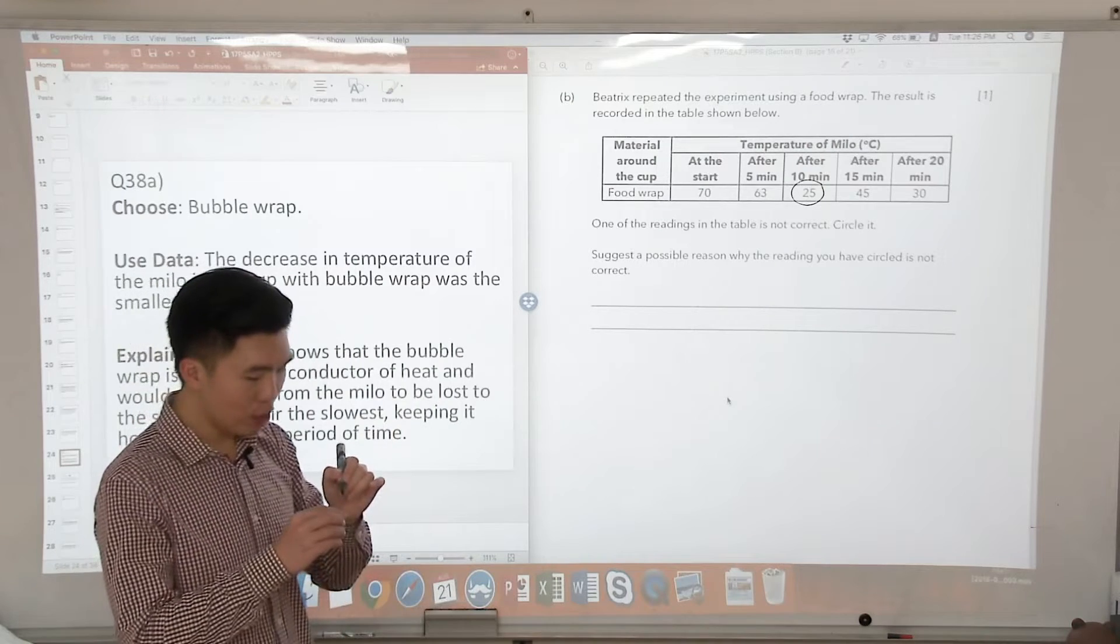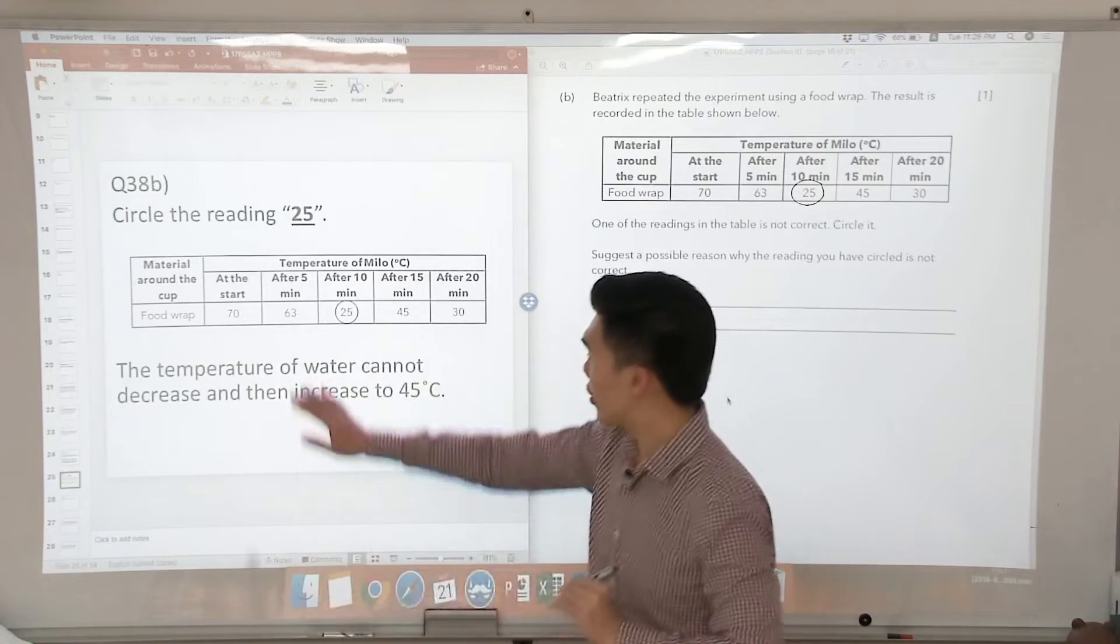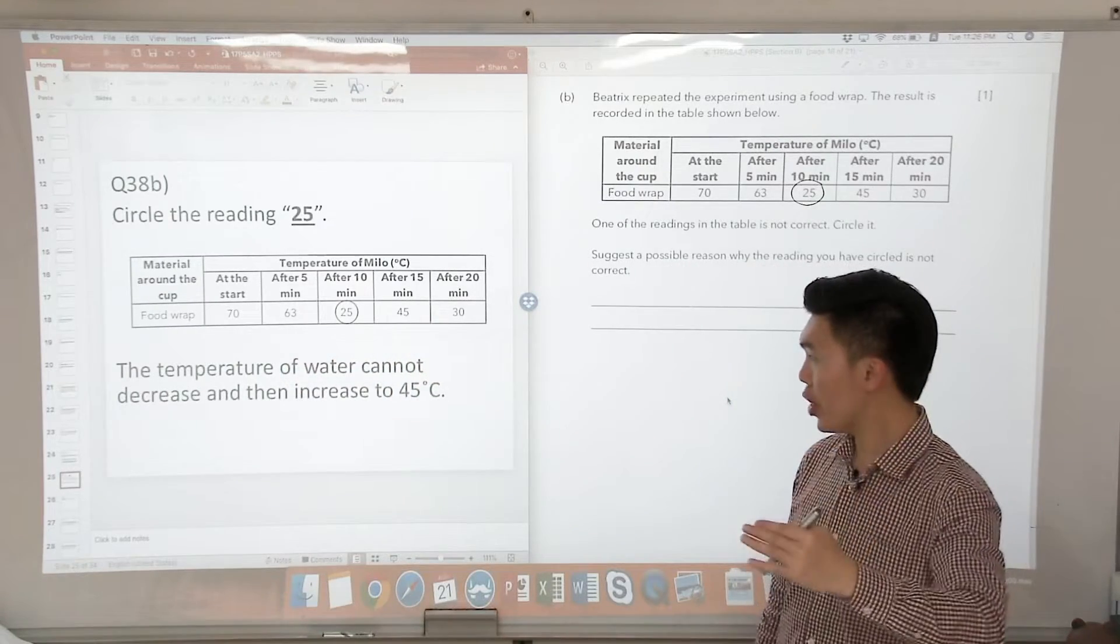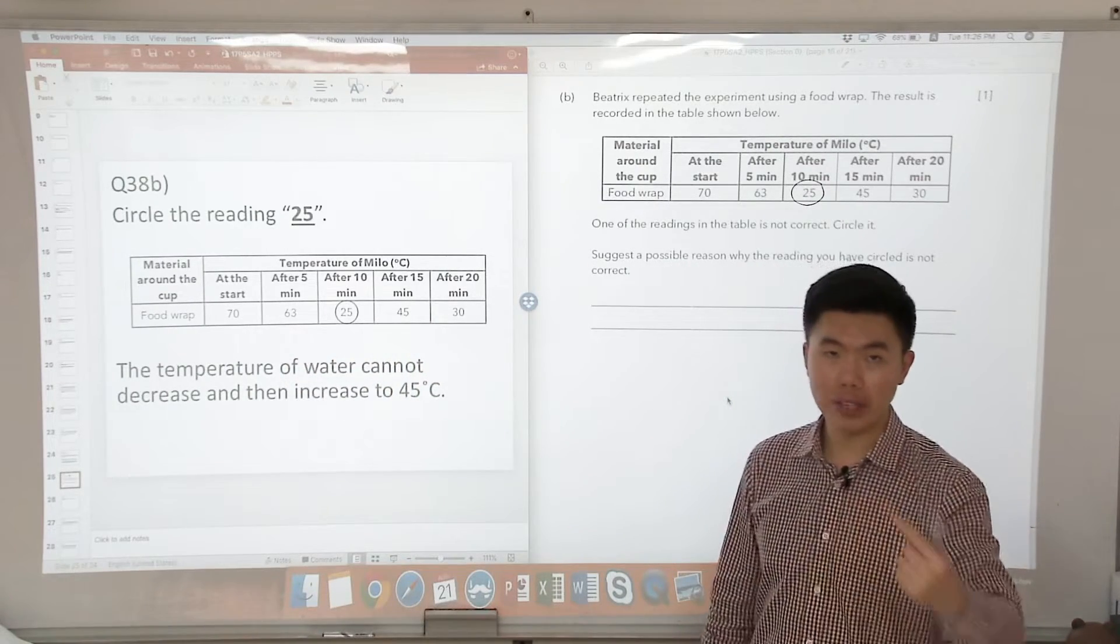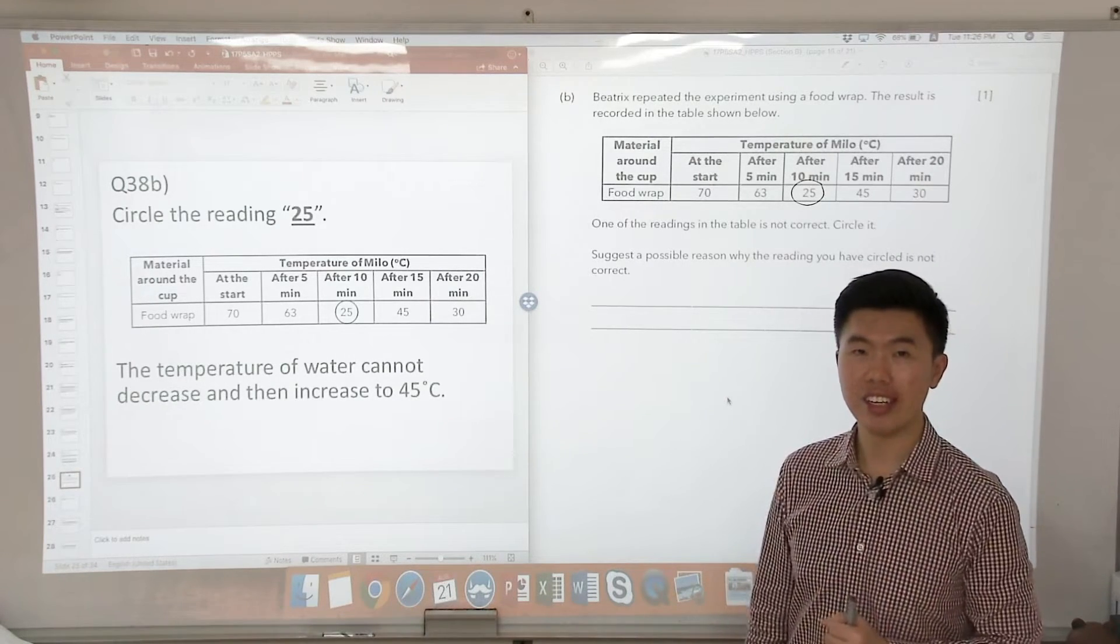So suggest a possible reason why the reading you have circled is not correct. The reason is because the temperature of the water cannot decrease and then increase to 45 degrees Celsius again. That is for question 38.